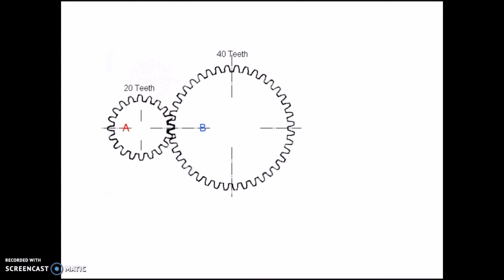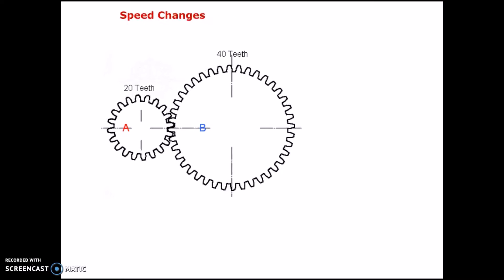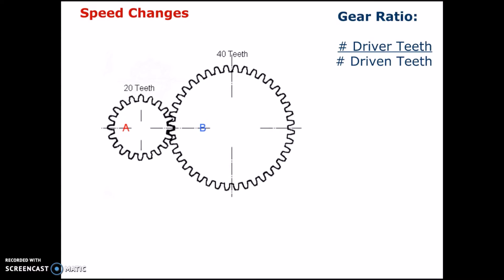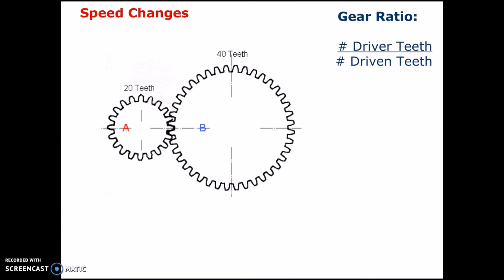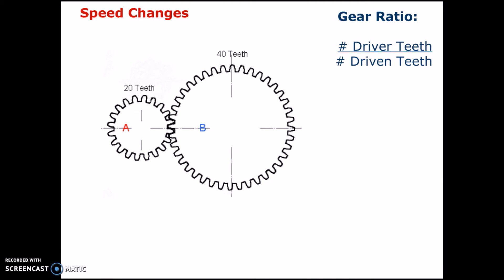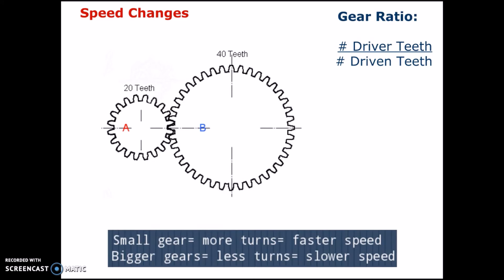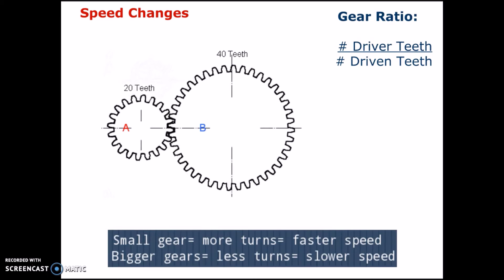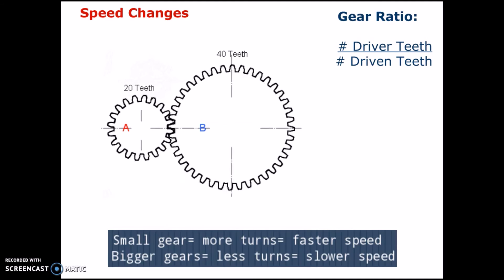Something I should mention about transmission systems is that you get speed changes. This is one of the things that occur if your components, the driver and driven, are different sizes. You can find the gear ratio by using the formula: the number of teeth on the driver divided by the number of teeth on the driven. You can see how much faster or slower the driven one is.